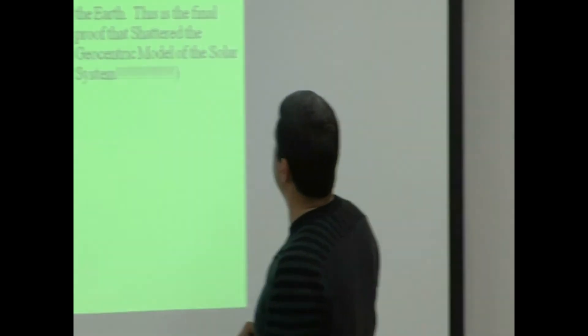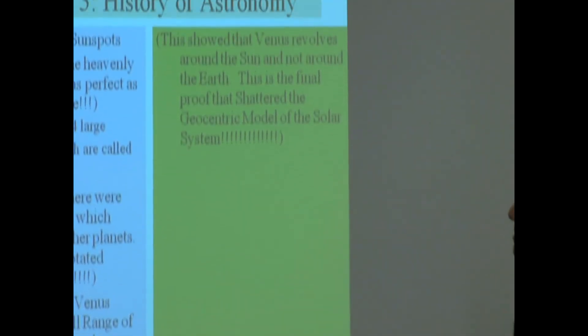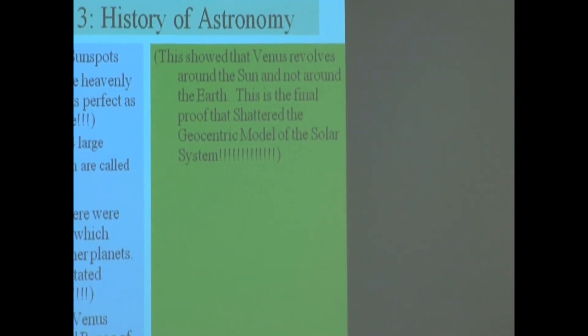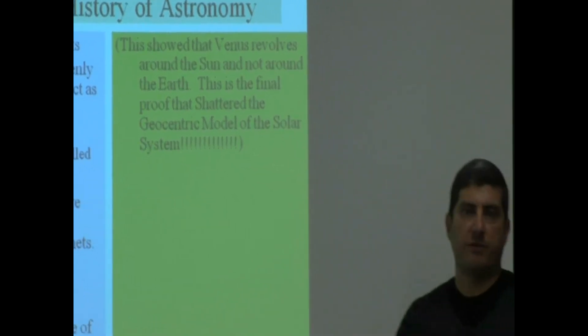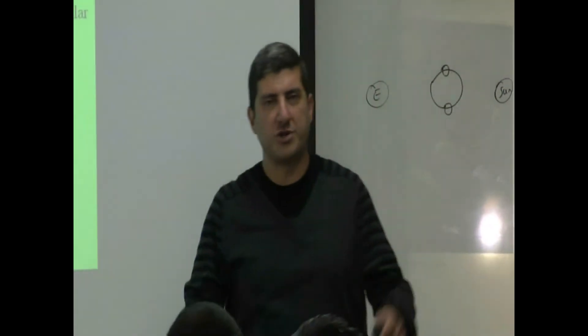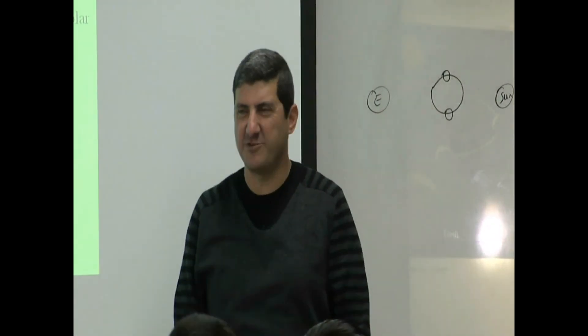This shows that Venus revolves around the Sun and not around the Earth. This is the final proof that shatters the geocentric model of the solar system. Of course, he writes a book on that. He gets imprisoned for all of these theories.